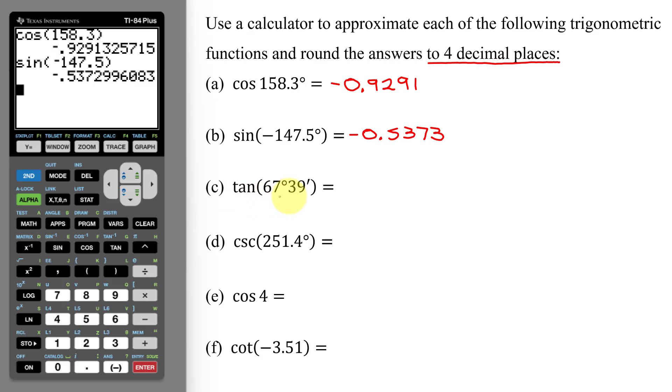Now in part C, my angle is in degrees and minutes. I prefer to just convert it to decimal degrees by saying my angle is 67 degrees plus—now how many minutes are there in a degree? 60. So it's going to be 39 divided by 60. And that is the conversion for converting 39 minutes into decimal degree form.